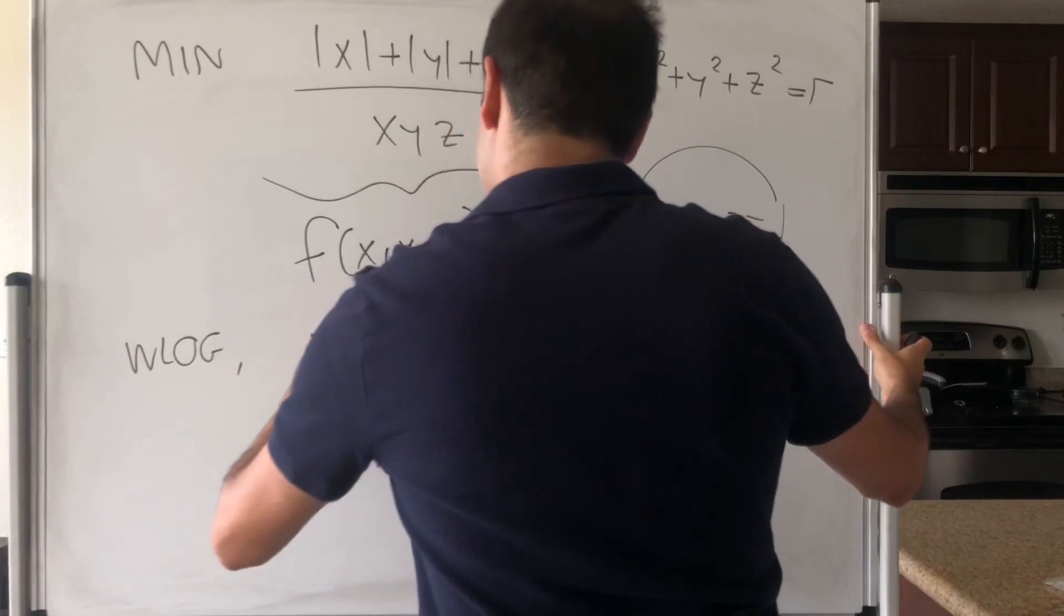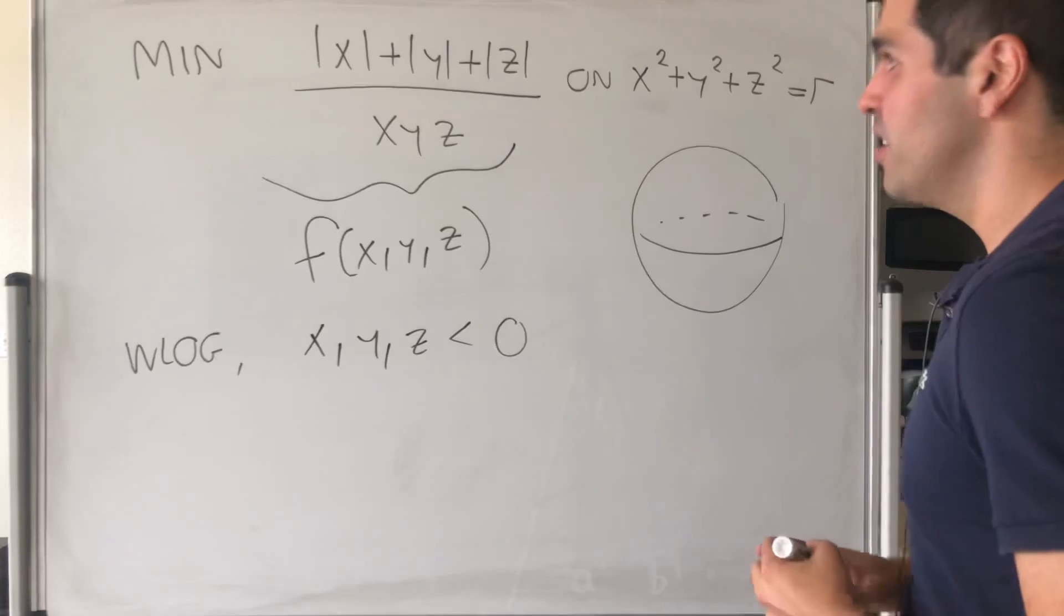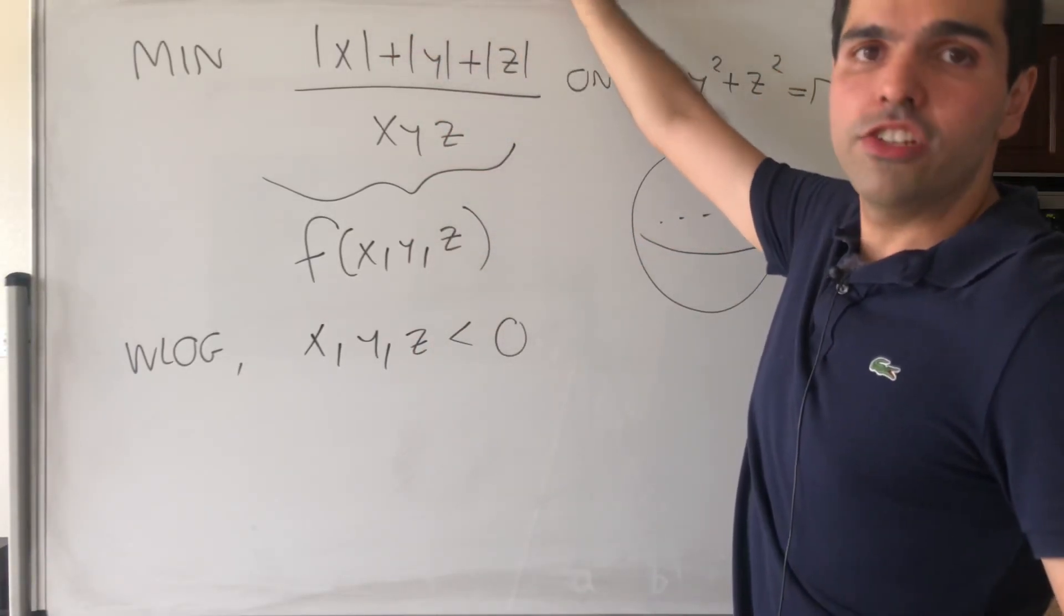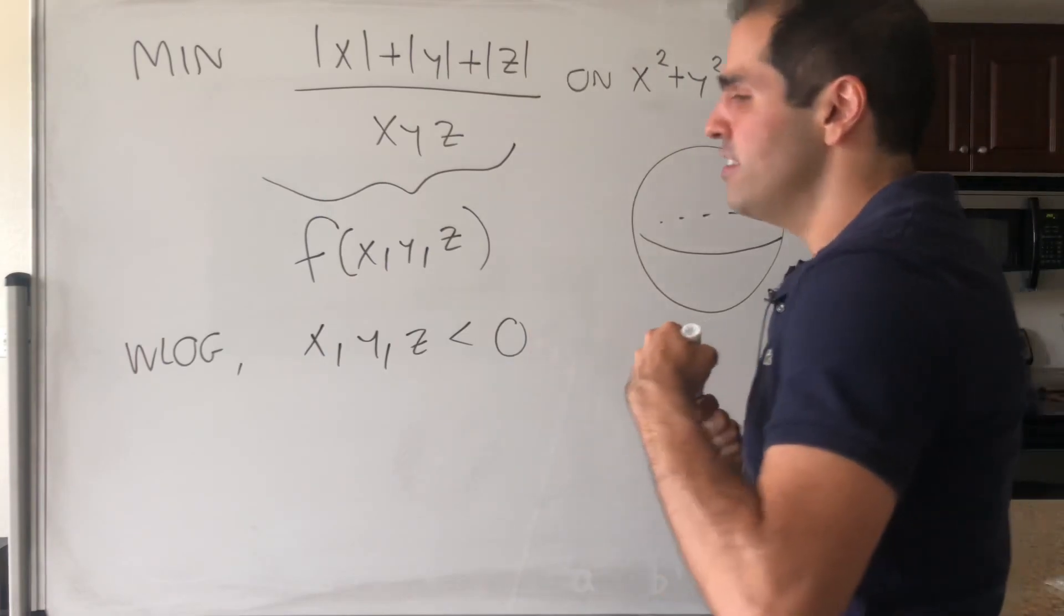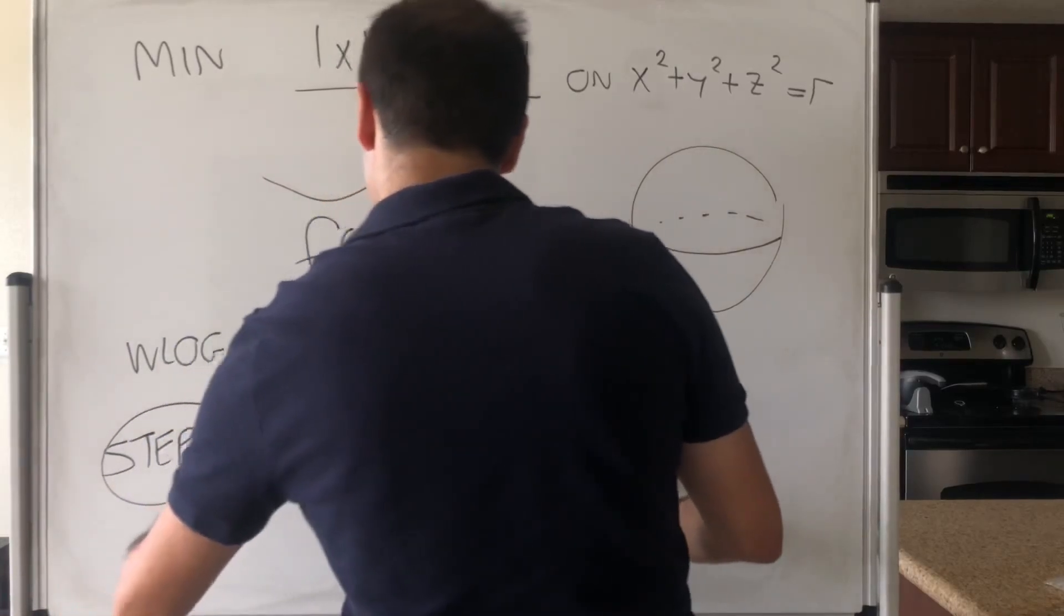So x, y, z are negative. And then what we want to consider, well, since all of those are negative, the numerator becomes minus x minus y minus z. So step one, consider minus x minus y minus z.